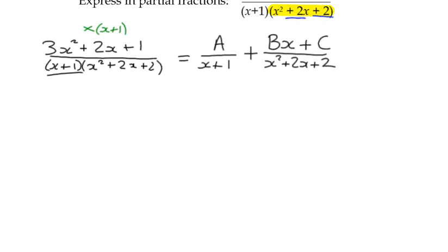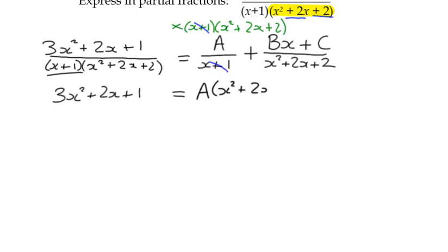We multiply through by the denominator. And if we have a look at that, then on the left-hand side, as always, the whole denominator disappears, it cancels out as we multiply through. And we're left with the numerator. If we have a look at what happens with the first fraction on our right-hand side, well, the x plus 1 cancels with the x plus 1. So we're left with A multiplied by x squared plus 2x plus 2.